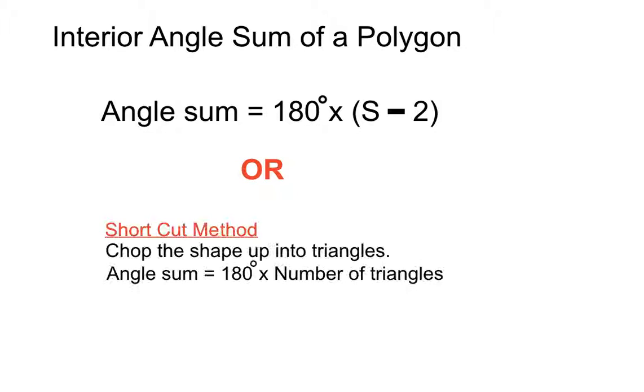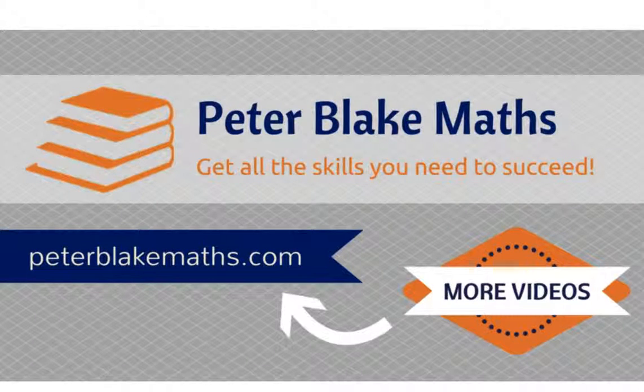We chop it up into a whole bunch of triangles and we multiply 180 degrees times the number of triangles we have on each of those specific figures. Hope that helps. That finds the angle sum of lots of different polygons there. Thanks so much for that. And I'll see you again on PeterBlakeMaths.com